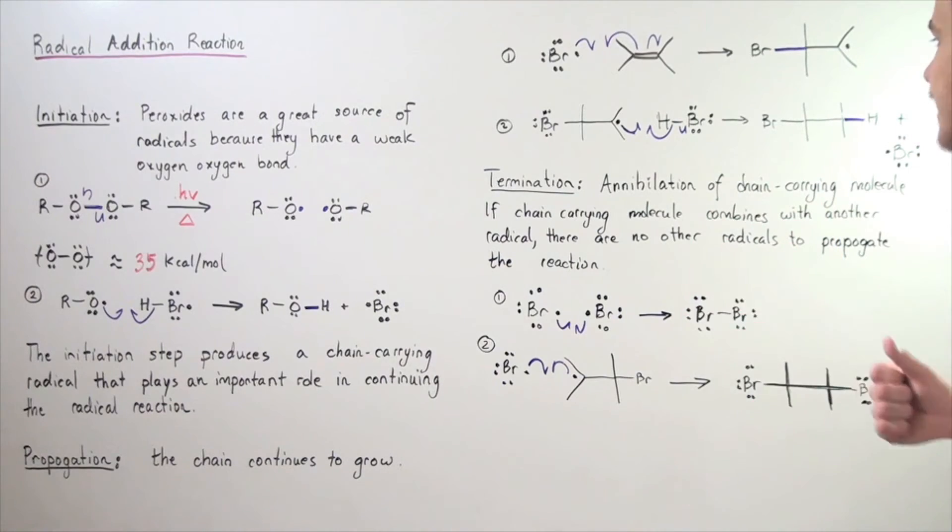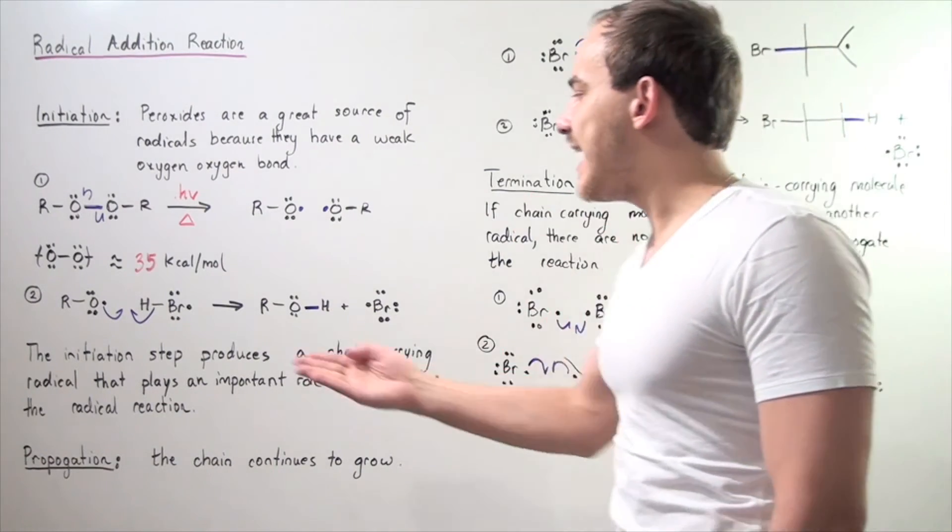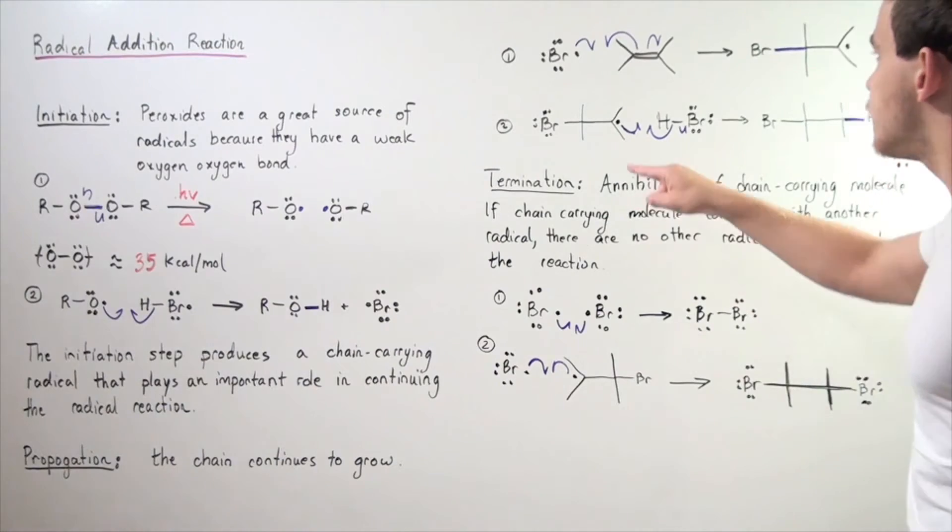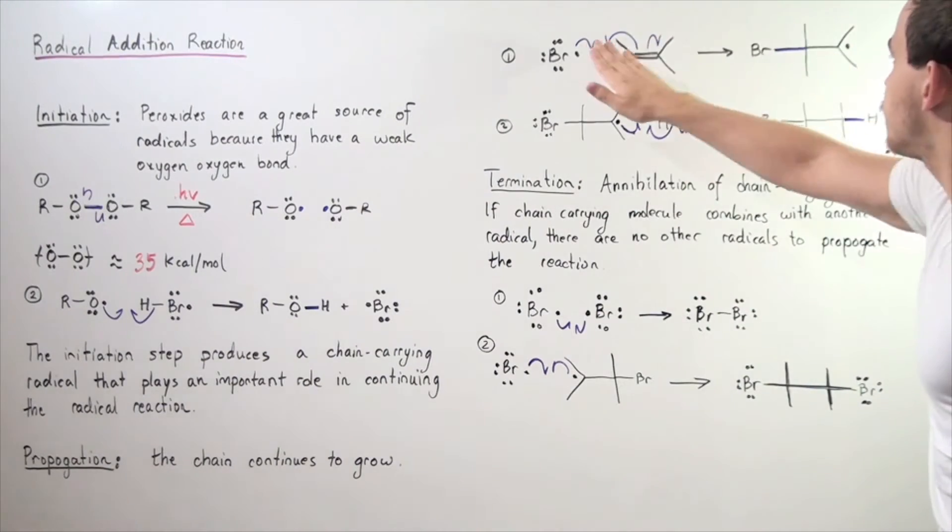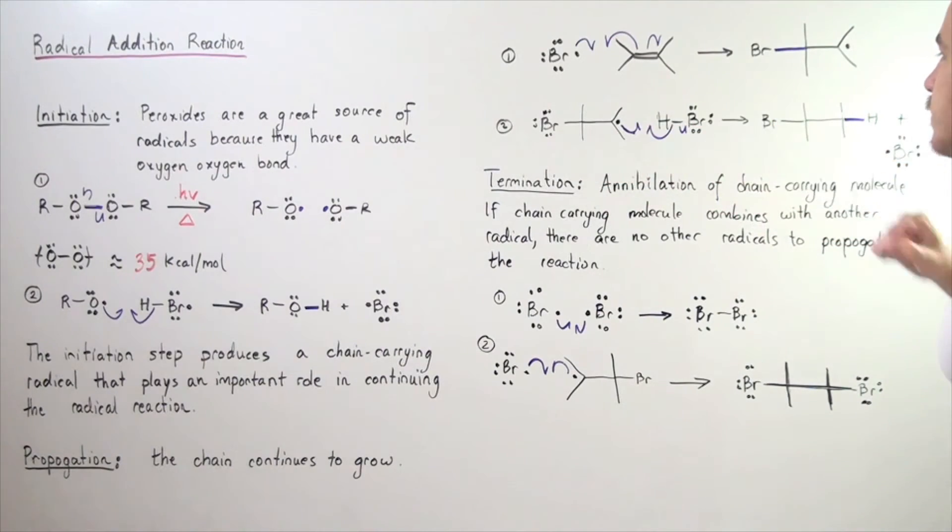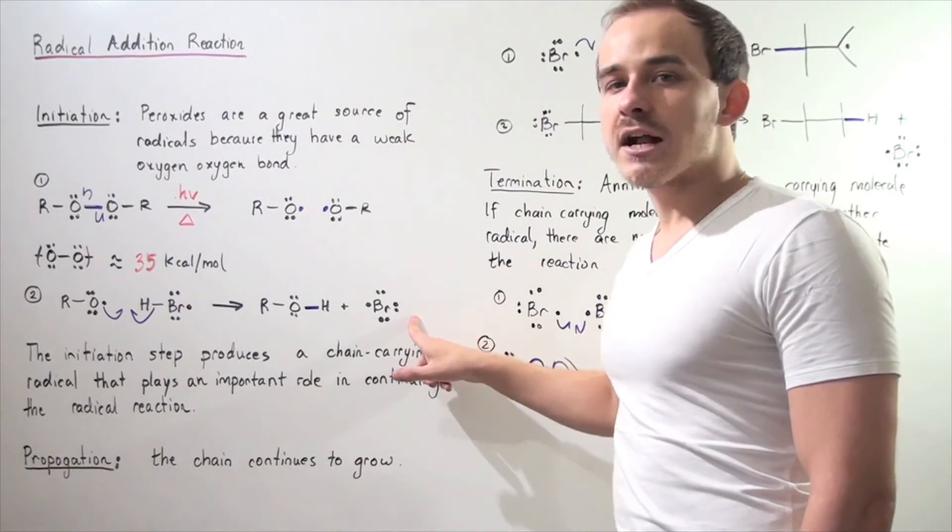In the second step of the propagation, we have a second HBr molecule that adds to the product of this first step. We form the following halogen-containing hydrocarbon and another chain-carrying radical.